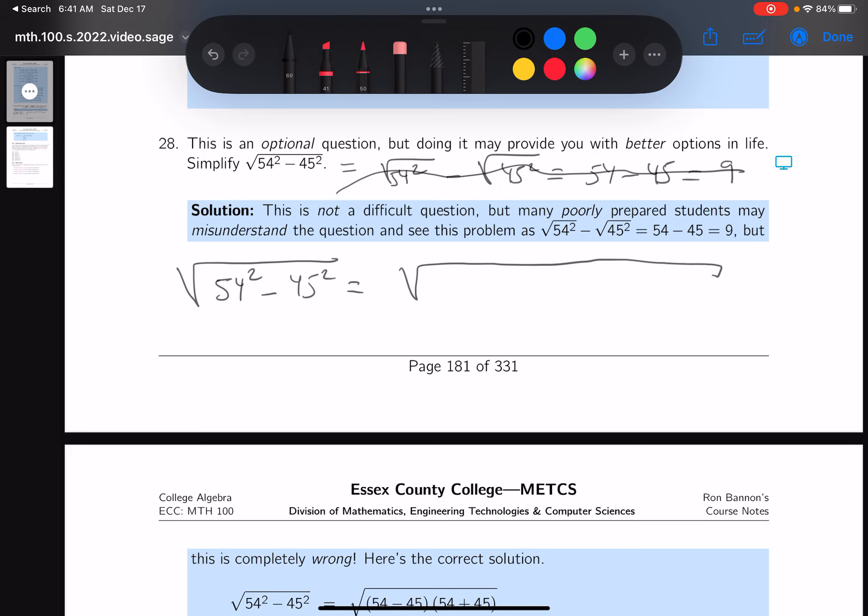Let's write that down. That's going to be 54 minus 45 times 54 plus 45. And 54 minus 45 is 9, and 54 plus 45 is 99.